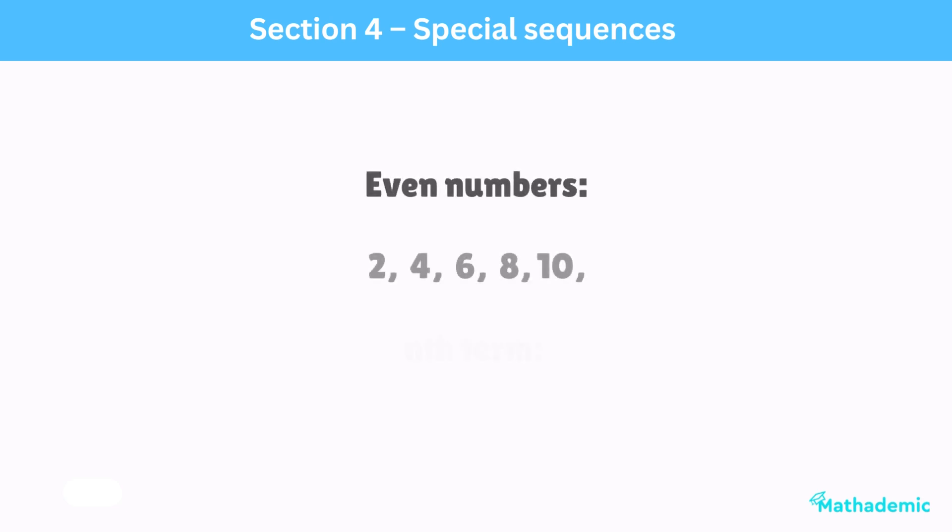Learn these ones. The sequence of even numbers, 2, 4, 6, 8, 10, has the nth term 2n. The sequence of odd numbers, 1, 3, 5, 7, 9, 11, has the nth term 2n-1.